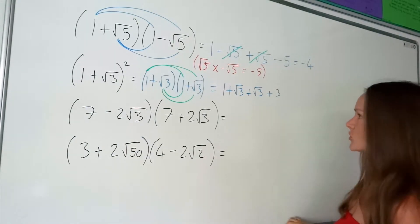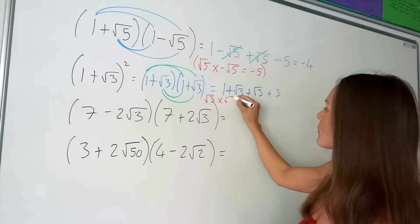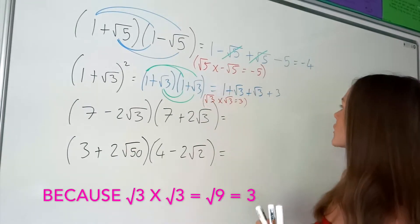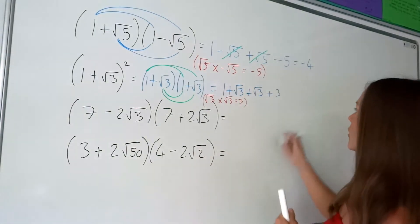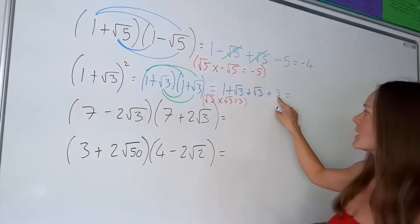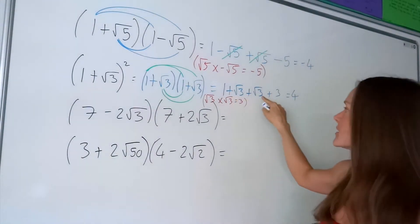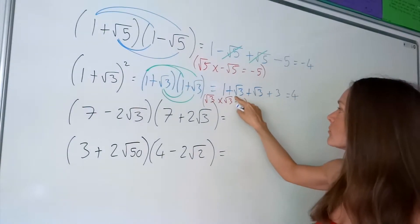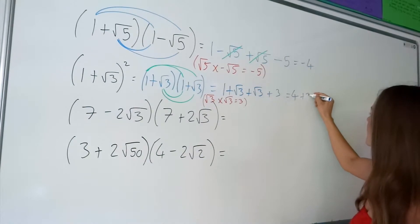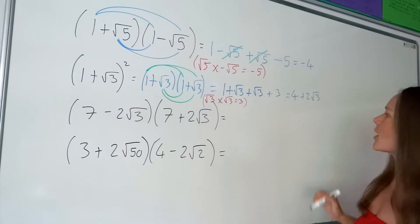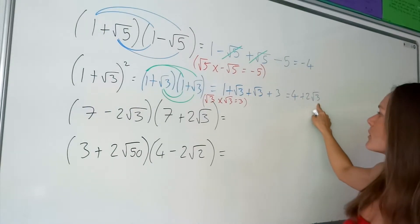So root 3 times root 3 is just equal to 3. Now all that's left is to simplify these terms. I've got 1 plus 3 here, which gives me 4. And then I've got 1 root 3 here and a second one here, so 1 root 3 plus 1 root 3 is 2 root 3. So that's the final answer — we just write it like that. We don't need to put times; we just put the 2 in front of the root 3.